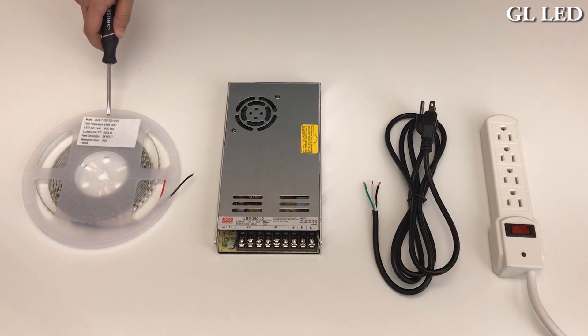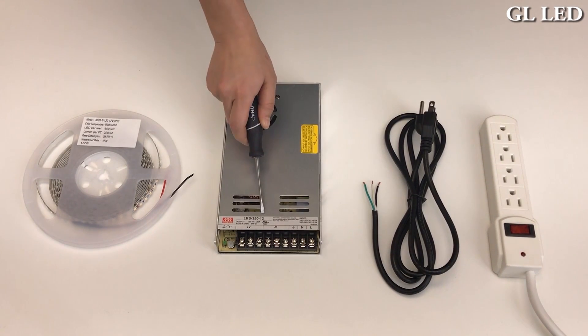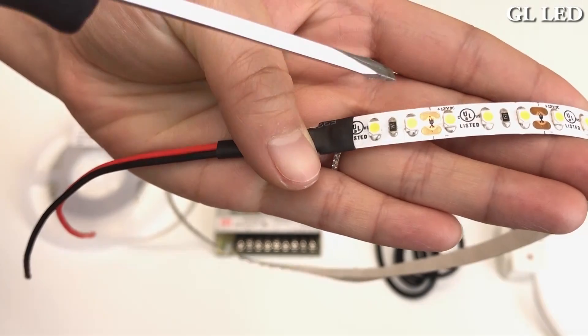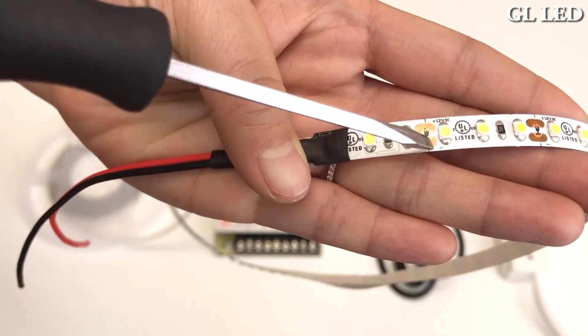Make sure your voltage for your strip light and transformer are the same. Your strip light is marked positive and negative.